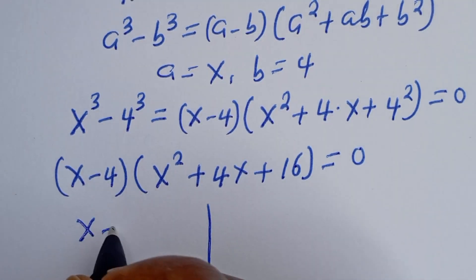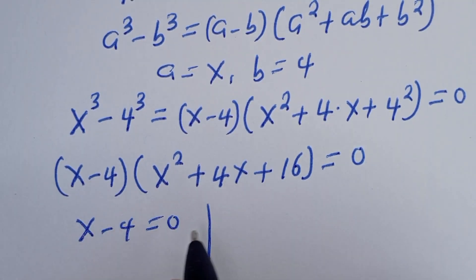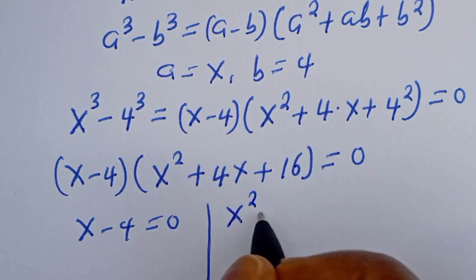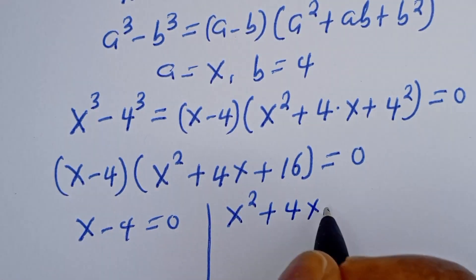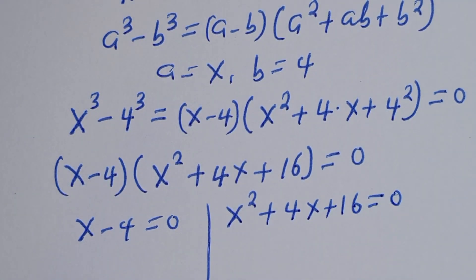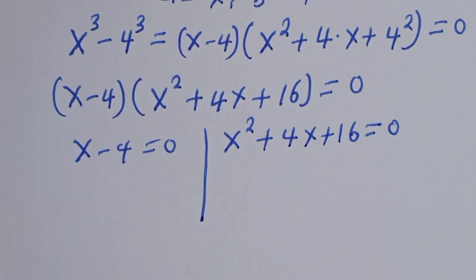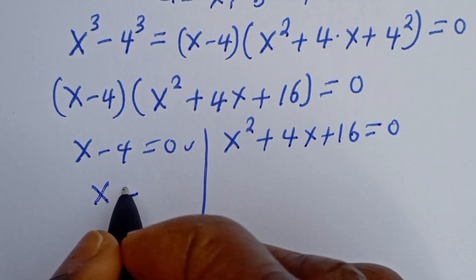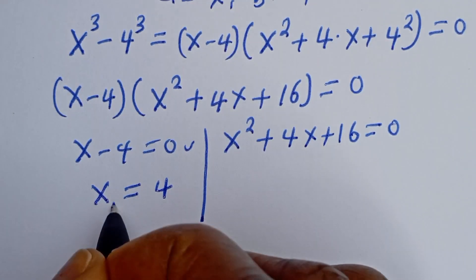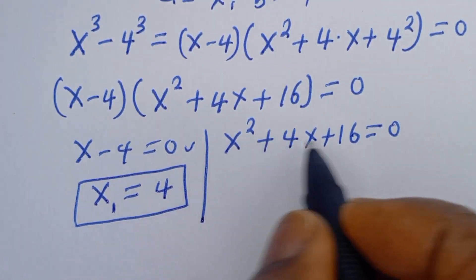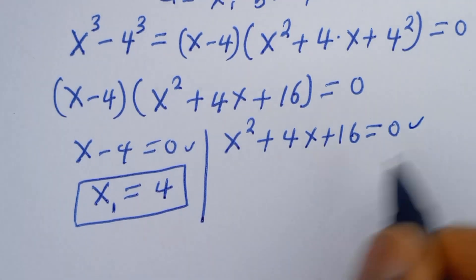So this becomes (s minus 4)(s squared plus 4s plus 16) is equal to zero. Now there are two cases: the first case is s minus 4 equal to zero, and the second case is s squared plus 4s plus 16 equal to zero. From the first case, s is equal to 4. Let's call this s₁.